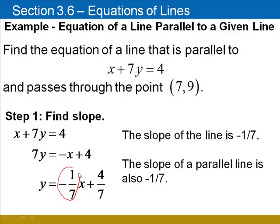m times x plus b. Now, in this problem, the y-intercept 4 sevenths is not important to us. We needed the slope. Now, we know that the slope of parallel lines are the same, so the slope of the line we're looking for also has a slope of negative 1 seventh.